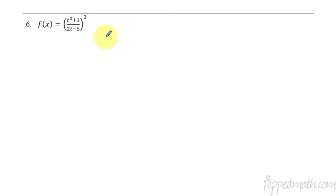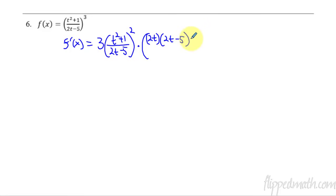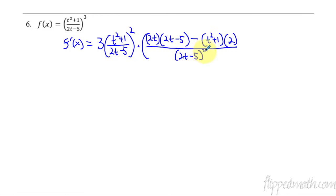This one: the 3 comes down for our derivative f prime of x. We get 3 times the fraction t squared plus 1 over 2t minus 5, now to the second power, times the derivative of the inside. The derivative of the inside here requires the quotient rule. The derivative of the numerator is 2t times the bottom left alone, so 2t minus 5, minus the numerator left alone t squared plus 1 times the derivative of the denominator which is 2, all over 2t minus 5 squared. It's like two different problems: quotient rule inside, chain rule in front.